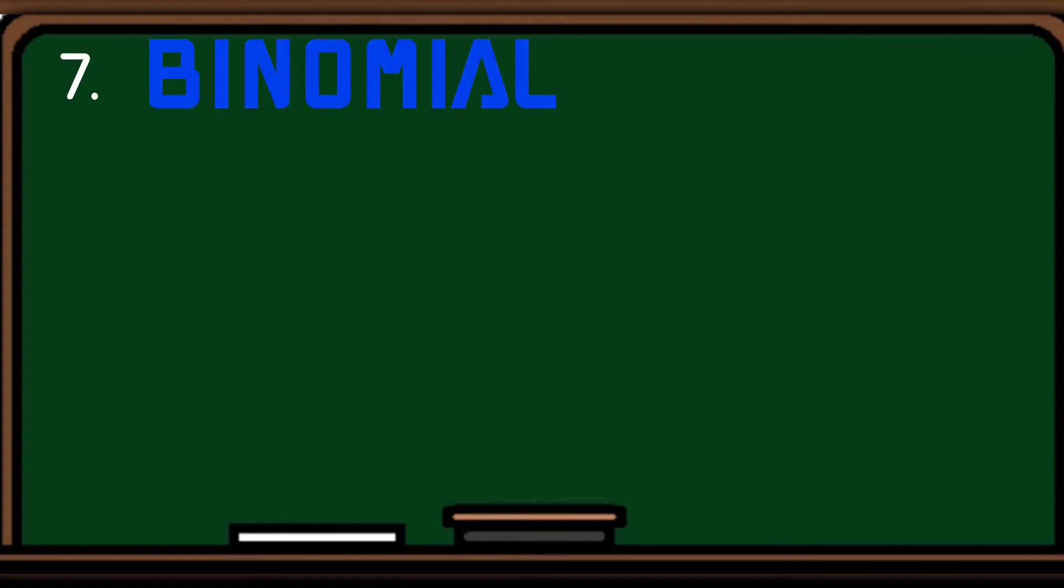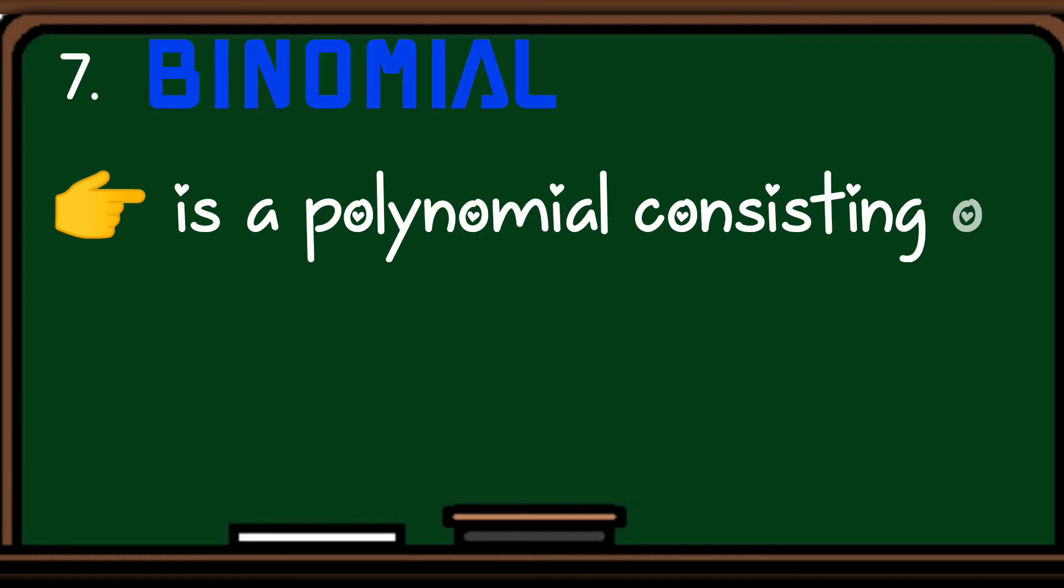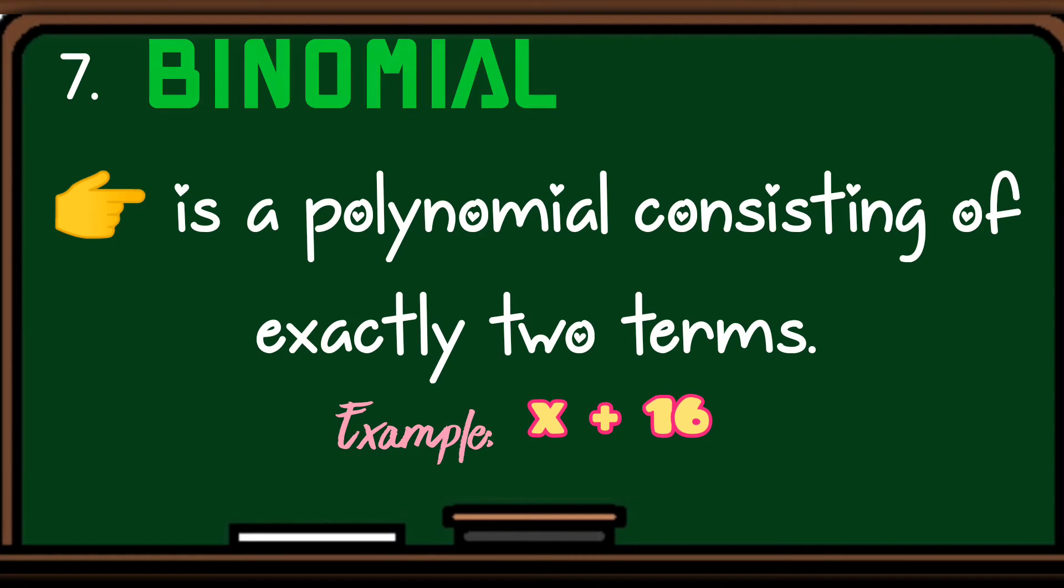Number seven, binomial. A binomial is a polynomial consisting of exactly two terms. Example, x plus 16. So, kaya siya tinawag na binomial kasi involving two terms, the x and 16.